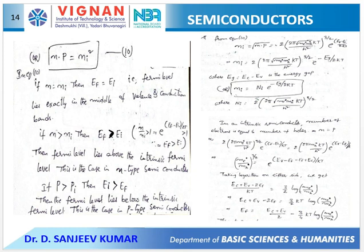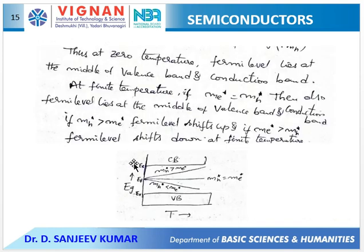The conclusions one can draw: in the case of intrinsic semiconductors, the Fermi level lies exactly in between the valence and conduction bands. If the effective mass of electron and hole are equal, the Fermi level is unaffected by temperature. But usually the effective mass of the hole is more, so with a rise in temperature the Fermi level shifts up. If the effective mass of the electron is more, the Fermi level shifts down with increasing temperature.